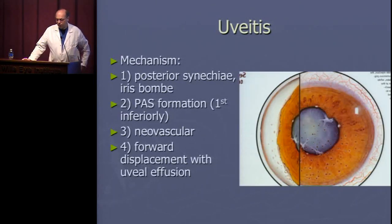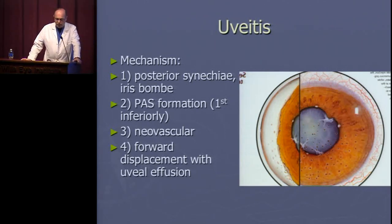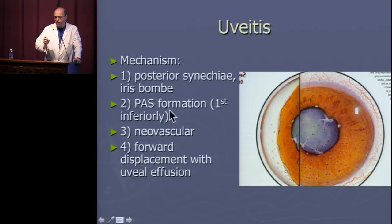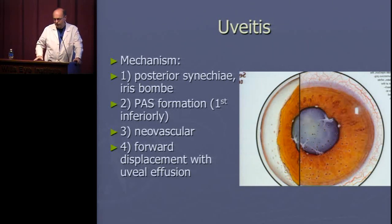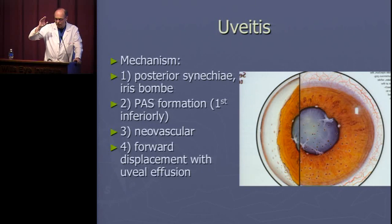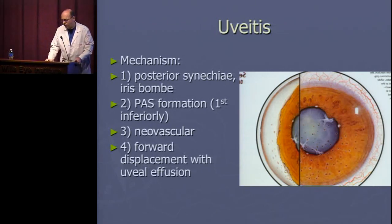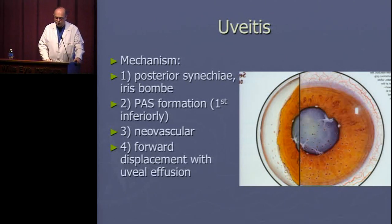Several mechanisms cause glaucoma in uveitis. You can have pupillary block if extensive adhesions develop at the pupillary margin to the lens or IOL, creating iris bombé and secondary angle closure. Inflammation itself, with PAS forming from inflammatory debris settling by gravity, typically forms PAS inferiorly — so inferior PAS suggests inflammation, whereas superior PAS suggests primary angle closure. Secondary angle closure can occur from PAS alone without pupillary block.